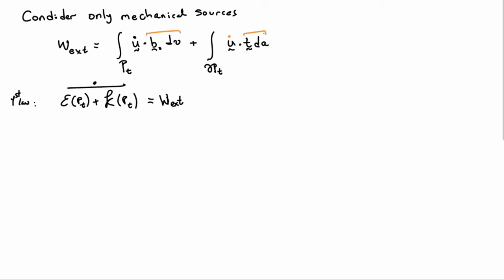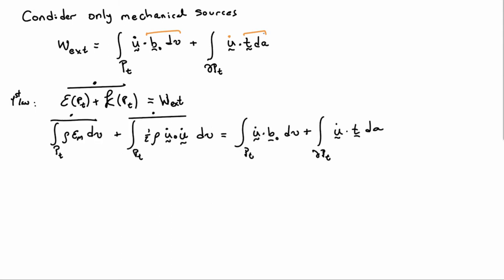The first law, accounting only for mechanical forces, says the time rate of change of E plus K equals W_ext, where EXT stands for external forces. We can fill in each of these terms via their integral expressions, combining the two integrals from the energy terms and the two from the external power terms.